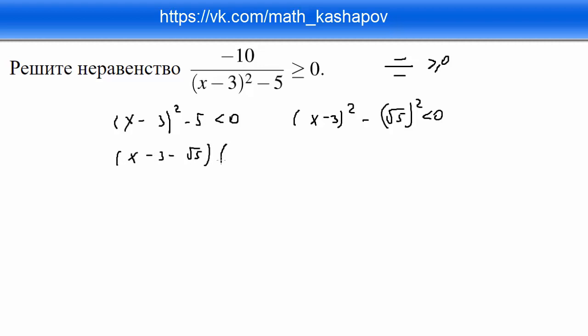и x минус 3 плюс корень из 5 равно 0, чтобы найти корни.